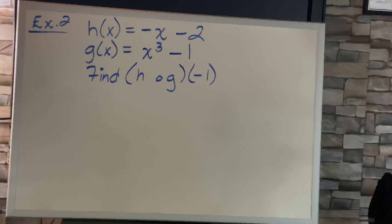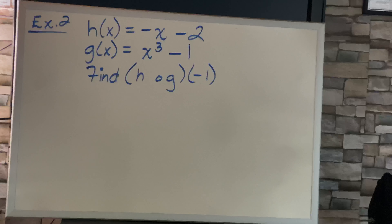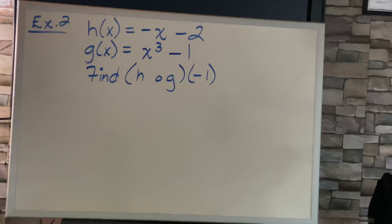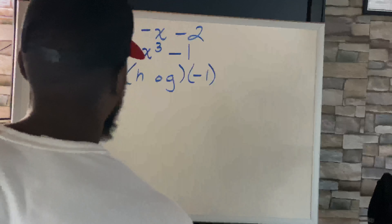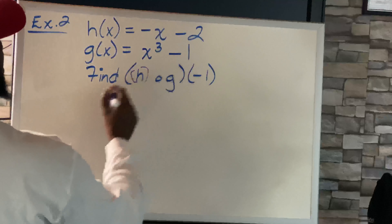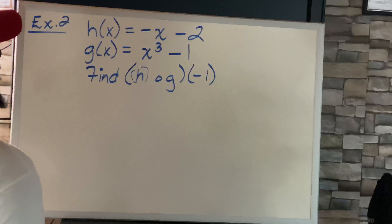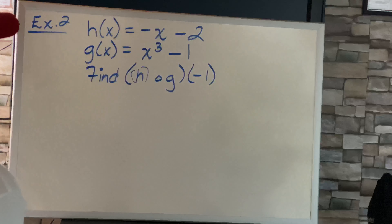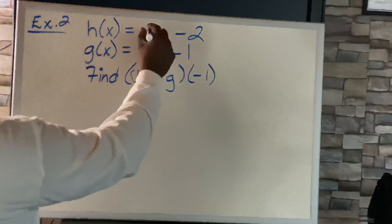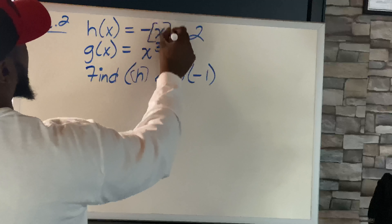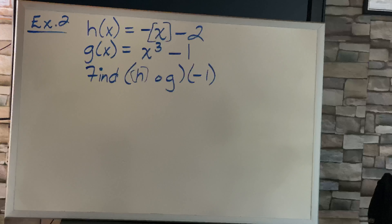Example 2: h of x equals negative x minus 2, g of x equals x cubed minus 1. Find h of g of negative 1. In this one, h is our base — remember the first letter is always the base, and the second letter is what we plug in. So h of x means that g of x goes right inside.